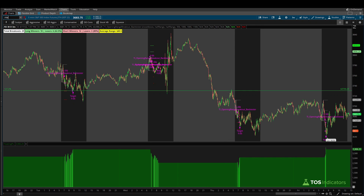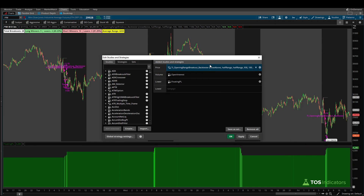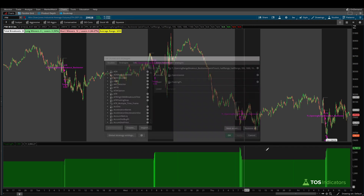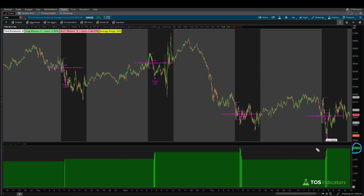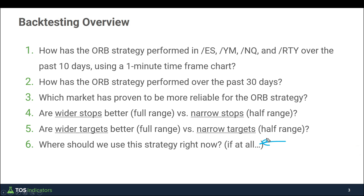Finally, switching back to close above and testing the Dow — our baseline was $4,280. Switching to wick touch, that number drops fairly substantially down to $2,797. So to summarize our final takeaways: the S&P and the Dow are the two markets where the strategy is working better compared to the Nasdaq and the Russell. The Dow is outperforming, but both markets are working fairly well. In terms of settings, wait for the confirmation — close above using a three-minute candle — with a half range stop and a half range target. That's where the strategy is working best right now.